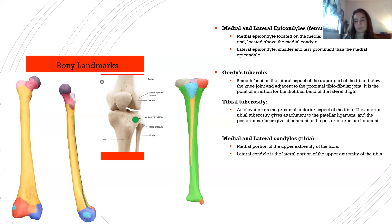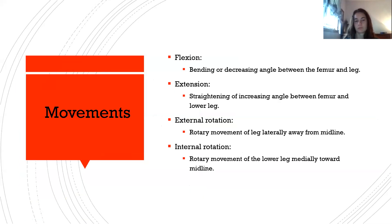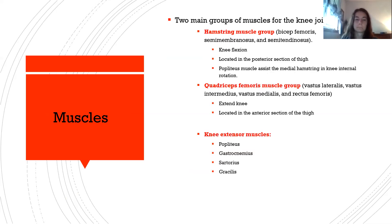General movements of the knee joint include: flexion — bending or decreasing angle between the femur and leg; extension — straightening or increasing angle between the femur and lower leg; external rotation — rotary movement of the leg laterally away from midline; and internal rotation — rotary movement of the lower leg medially toward the midline.